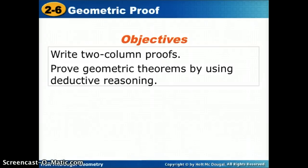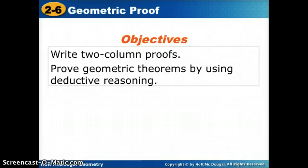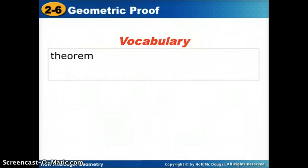In today's lesson, we are going to keep talking about proofs, but we're going to try to move more in the geometric direction. We'll talk more about figures and those types of things. Our objectives today will be to write two-column proofs and to prove theorems using deductive reasoning. The vocab words you're going to want for today are theorem and two-column proof.